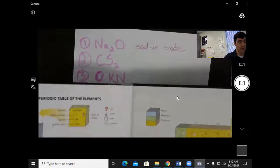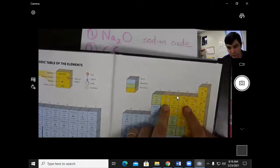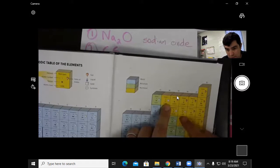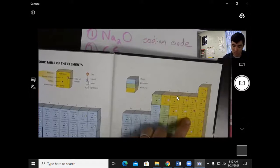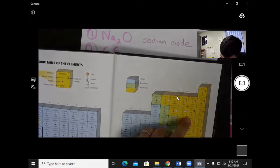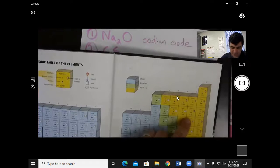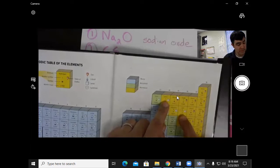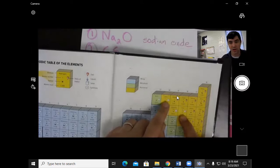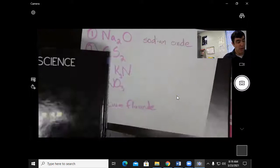This next one, carbon and two sulfurs. Here's carbon and here are two sulfurs. Let me get someone to help with this. David. Carbon and two sulfurs. Is this ionic or is this covalent? Carbon is a non-metal and sulfur is a non-metal. So that makes it what? Covalent.